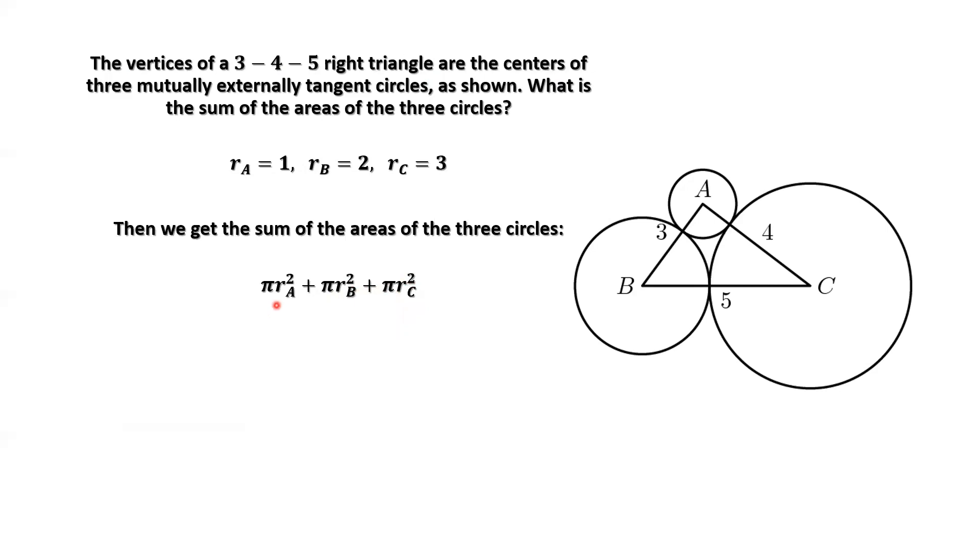We replace the three radii by 1, 2, and 3. We have pi times 1 squared plus 2 squared plus 3 squared, which is 14 pi.